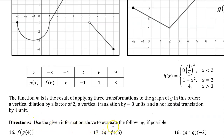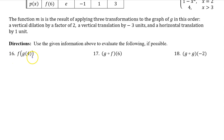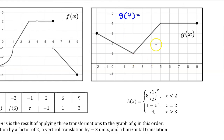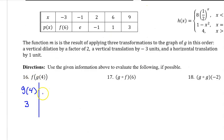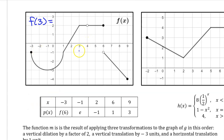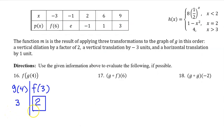Use the given information above to evaluate the following if possible. Number 16. For this notation we work from the inside out, so we start by evaluating G at 4. Here's function G, and the input value of 4, so G at 4 is 3. Working outward we get to function F. F at G at 4 now becomes F at 3. Here is function F and the input value of 3. The value of F at 3 is 2. So that's the answer for number 16.